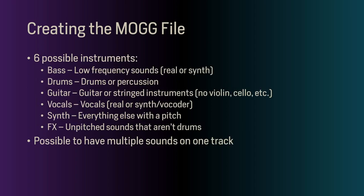When you create your MOG file, you need to create six different tracks. These six tracks can contain six different instruments represented by different colors in the game: bass, drums, guitar, vocals, synths, and effects. Bass contains any low frequency sound, real or synthesized. Drums contain drums or percussion. Guitar will contain acoustic or electric guitar as well as other stringed instruments such as banjo or ukulele — however this does not include violin, cello, or anything of that instrument family.